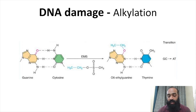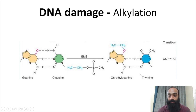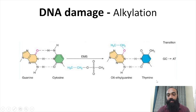The next type of DNA damage is DNA alkylation — the addition of an alkyl group onto a base. An example is EMS (ethyl methane sulfonate), which donates an alkyl group onto guanine, changing its structure to form O6-ethyl guanine. During the next replication, O6-ethyl guanine mis-pairs with thymine instead of correctly pairing with cytosine. This type of mutation, where one purine is converted and causes mis-pairing with another pyrimidine, is referred to as a transition mutation.